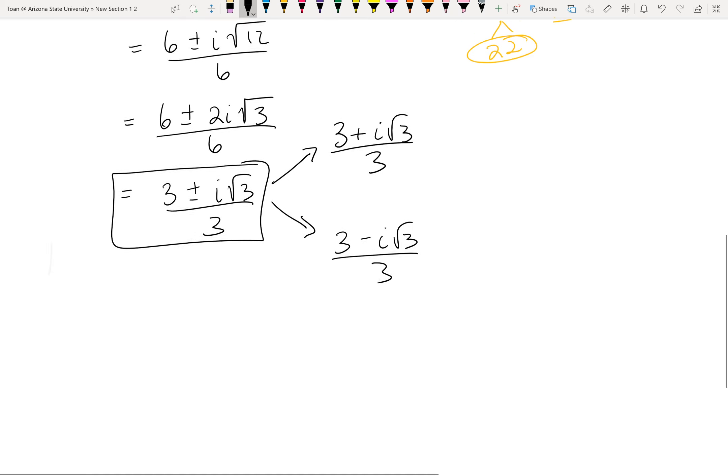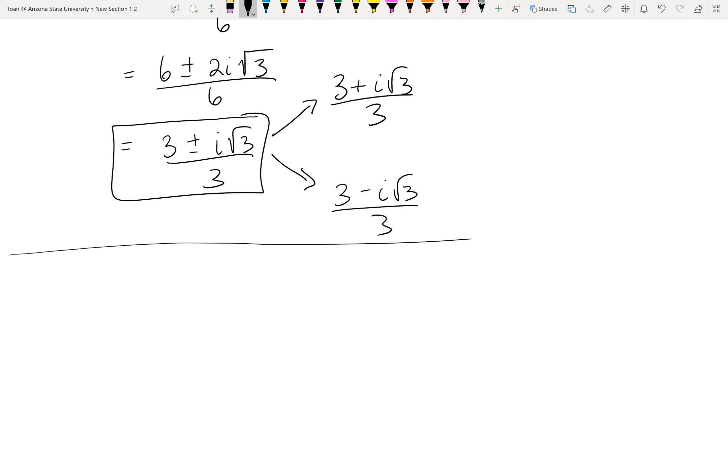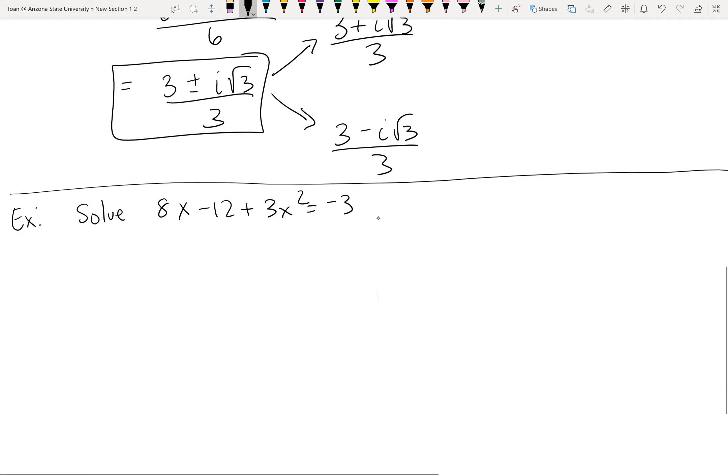Now the only way I can make this more difficult, and it's not difficult at all, is if I scramble up the problems, if things aren't equal to zero. So for example, if I ask you to solve 8x - 12 + 3x² = -3. Well the first thing I want to do is make sure that the equation is equal to zero. When we solve a quadratic, we want zero on one side. So the first thing I'm going to do is I'm going to add the 3 over.